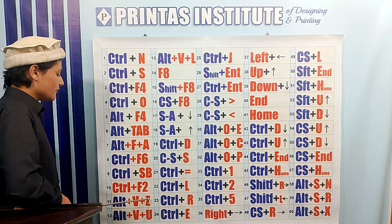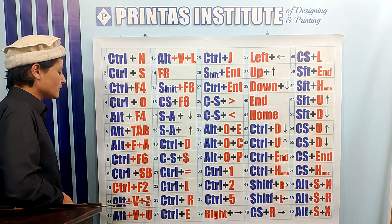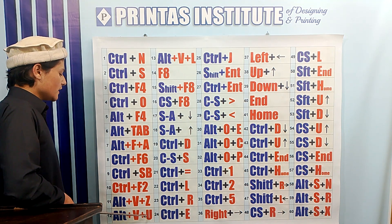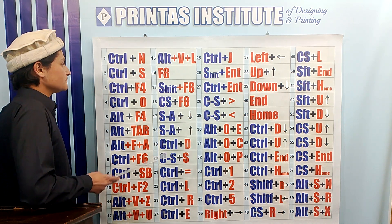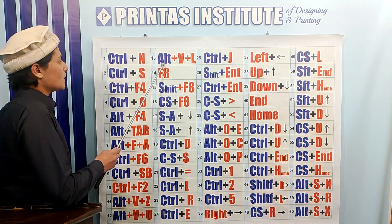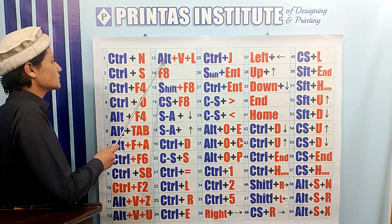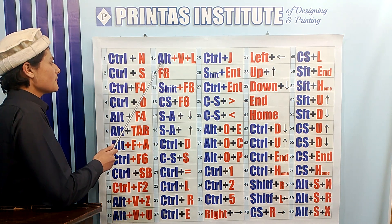Alt VZ is used to set the zoom of the document. Alt VU is used to see the normal view of the document. Alt VL is used to hide or show the ruler.